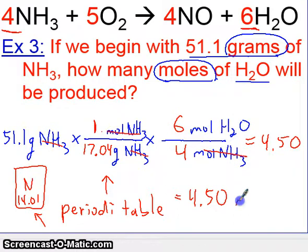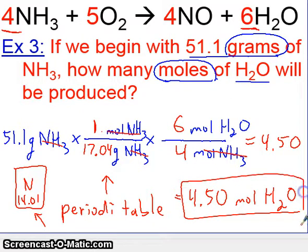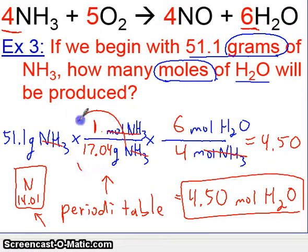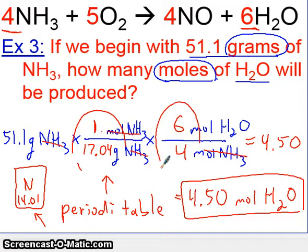So we have moles of H2O as our final answer. Take a step back and think through what we did here. We began with grams of one substance; we first converted that substance to moles. Then we went from moles of that substance to moles of another substance. In the first step, we used the periodic table conversions. In the second step, we used the balanced equation conversions. And this is how you do a two-step problem.